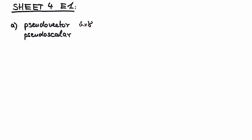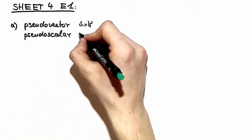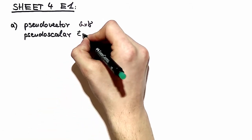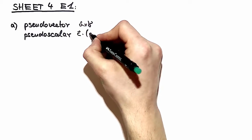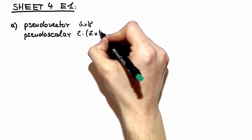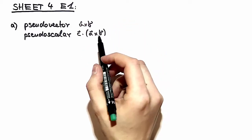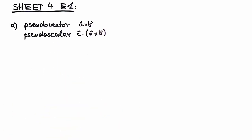A pseudoscalar we want to construct out of a pseudovector, so we have to give back two properties: make a scalar out of it and give back the inversion property. Nothing could be easier. We just multiply with a scalar multiplication onto this pseudovector and obtain a pseudoscalar. This makes sense because this is how volume is defined, and volume is again invariant under rotations.